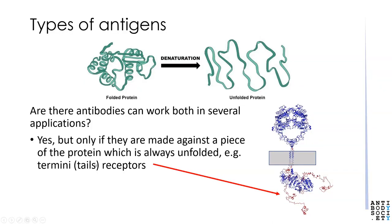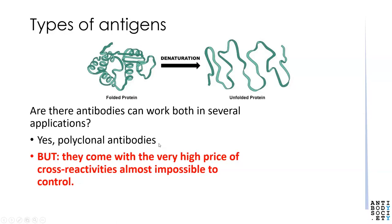To every rule there's an exception: there are a few antibodies that work in several applications, both in folded and unfolded proteins. This is true if they're made against a piece of the protein which is always unfolded — for example, the termini of receptors that would be recognizable in Western blots as well as in pull-down assays. It would also work with polyclonal antibodies because there would most likely be a mixture of antibodies recognizing folded and unfolded proteins, but this comes at a very high price of cross-reactivity that are almost impossible to control.